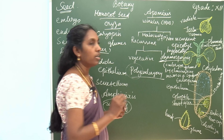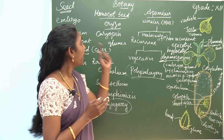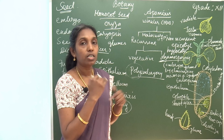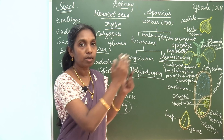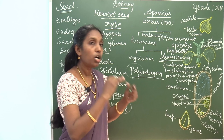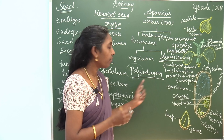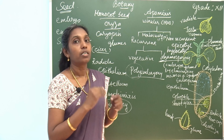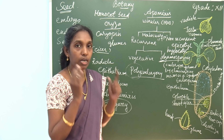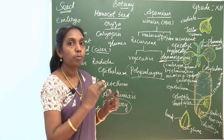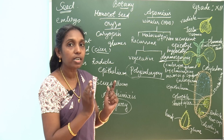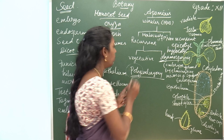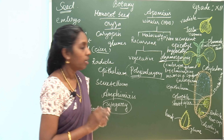Polyembryony is the occurrence of more than one embryo in a seed. Normally a seed possesses one embryo, but here more than one embryo occurs. The occurrence of more than one embryo in a seed is known as polyembryony.